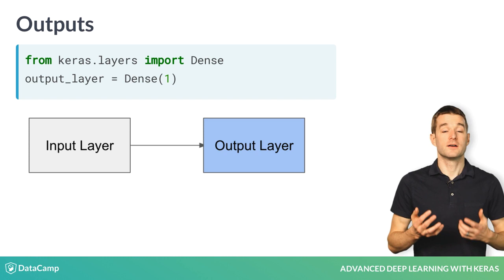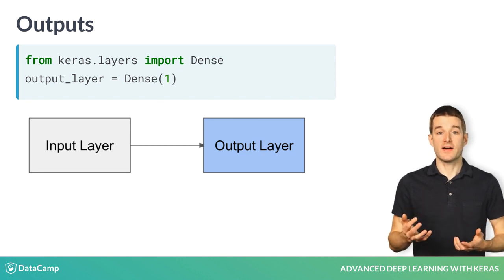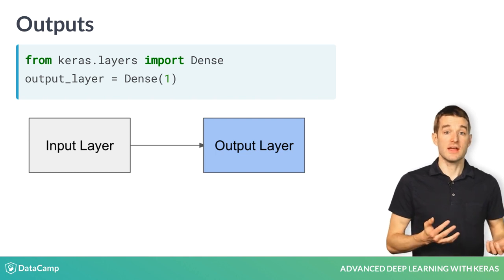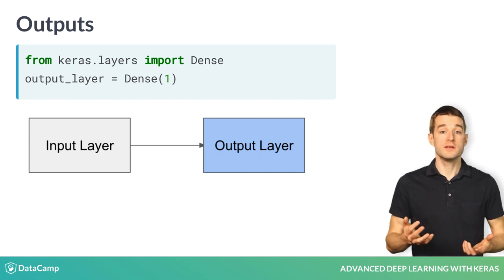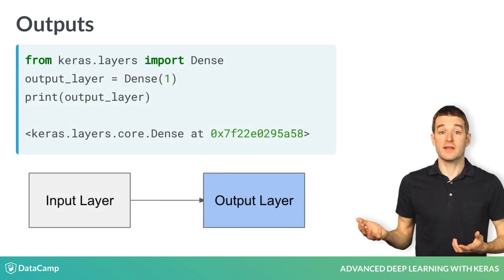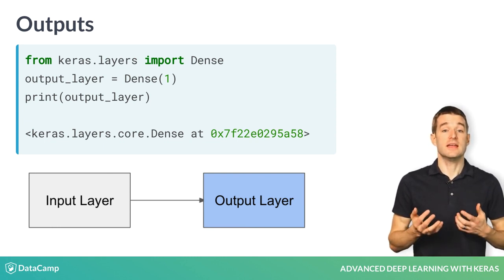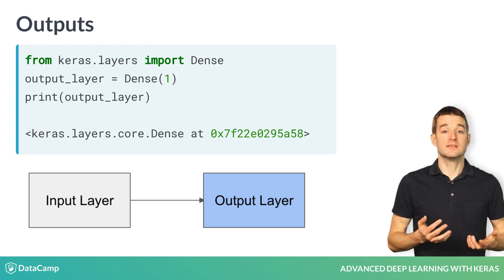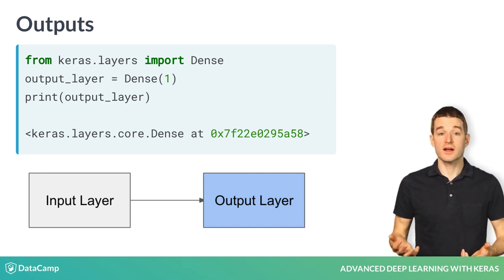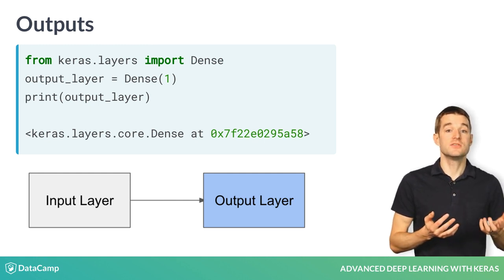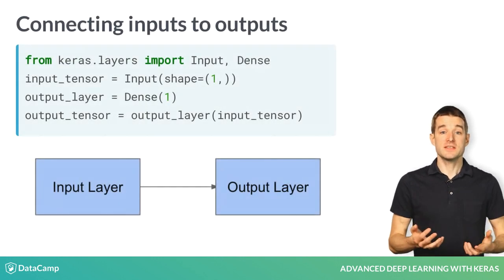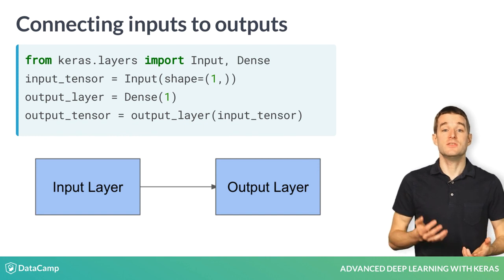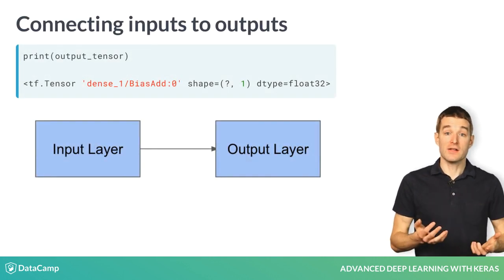Now that we've defined our input layer, let's define the output layer. Outputs in Keras are most commonly a single dense layer, which specifies the shape of the expected output. In this case, we are expecting our model to predict a single value, so we pass one unit to the dense layer. If you print the output layer, the result is not a TensorFlow tensor — it is a function which takes a tensor as input and produces a tensor as output. The difference between layers and tensors is key to understanding the Keras Functional API. Layers are used to construct a deep learning model, and tensors are used to define the data flow through the model. The input layer defines a tensor, which we then pass to the output layer function, and the final output of our model is a tensor.